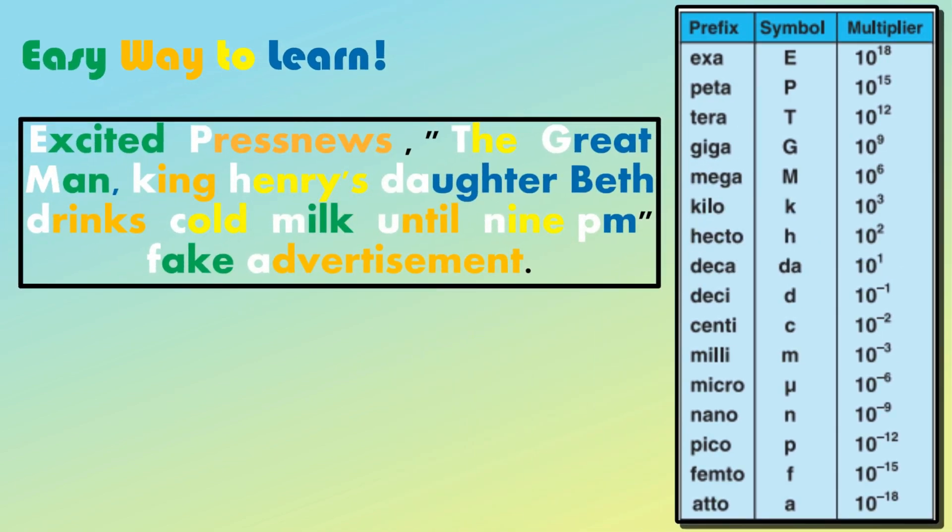Don't worry, here's the method to learn it: Excited press news, the great man, King Henry's daughter Beth, drinks cold milk until 9 p.m.